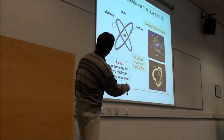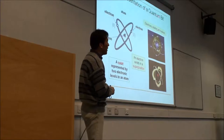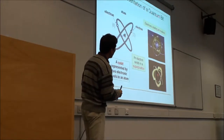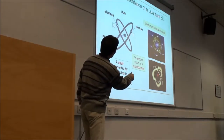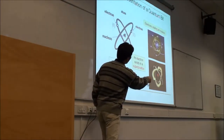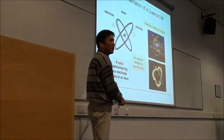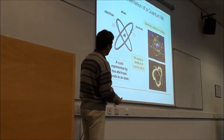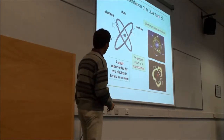Another possible physical representation is the atom, with an electron orbiting the nucleus. One single electron can exist in two different energy levels. The upper level is considered bracket 1, and the lower is bracket 0. The electron actually exists in both orbits simultaneously — that state is called superposition. The electron exists in superposition.